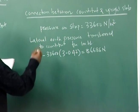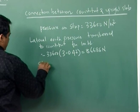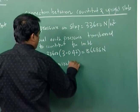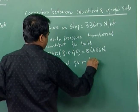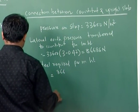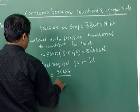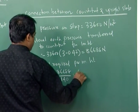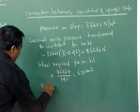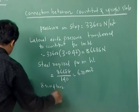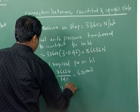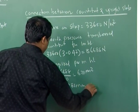Steel required per meter height equals 866.88 divided by the stress in steel (140), which comes out to approximately 620 mm². So you can take 8 mm phi bars at a spacing of 80 mm center to center.